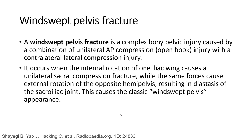It occurs when the internal rotation of one iliac wing causes a unilateral sacral compression fracture, while the contralateral force creates rotation of the opposite hemipelvis, resulting in diastasis of the sacroiliac joint. This was the classic windswept pelvic pattern.